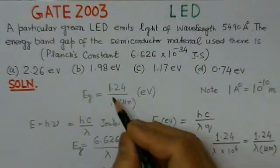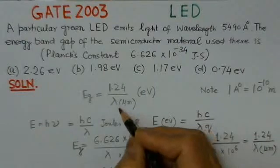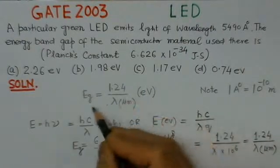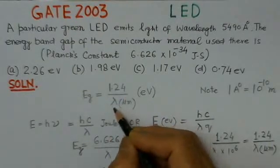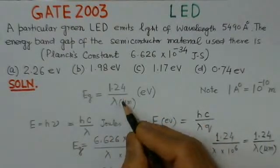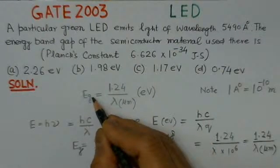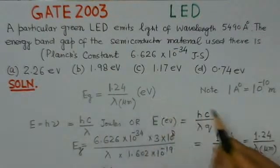And the relation here is EG is 1.24 over lambda, where lambda is the wavelength in micrometers, and this energy band gap is in electron volts.